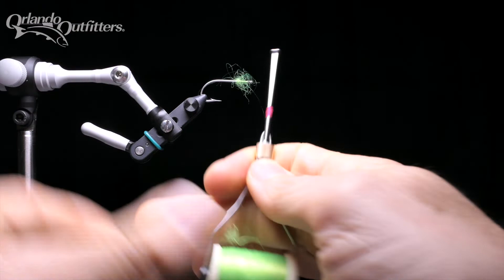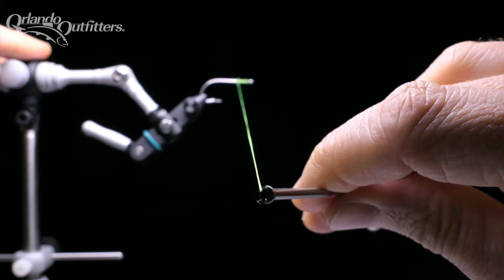Also, pay attention to where and how your thread breaks. If it breaks right where it runs across the end of the bobbin, that could indicate a problem with the bobbin.